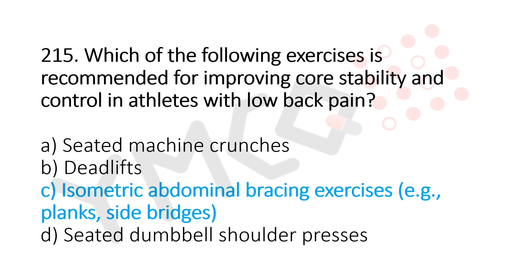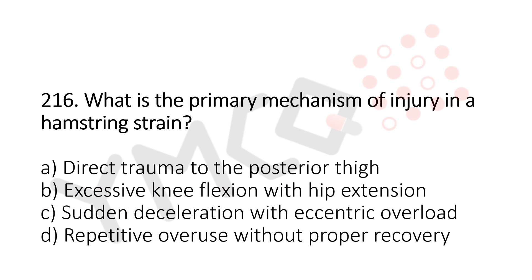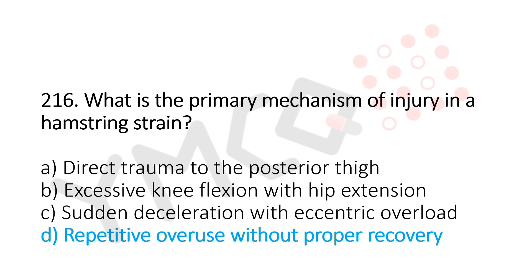Question 216: What is the primary mechanism of injury in a hamstring strain? Option A: direct trauma to the posterior thigh. Option B: excessive knee flexion with hip extension. Option C: sudden deceleration with eccentric overload. Option D: repetitive overuse without proper recovery. The answer is option D, repetitive overuse without proper recovery.